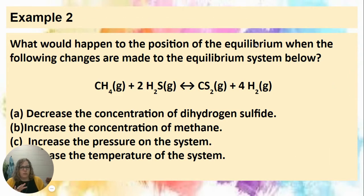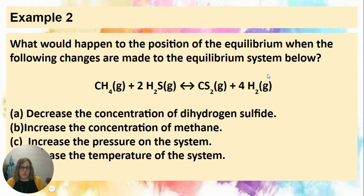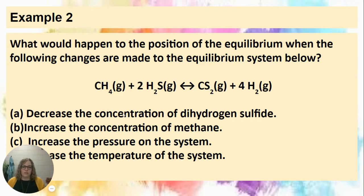The best way to understand this is through examples. We'll look at the reaction of methane (CH4) and hydrogen sulfide (H2S) making CS2 and 4 H2. We'll assume the reaction is at perfect balanced equilibrium, then go through four different changes: decrease the concentration of H2S, increase the concentration of CH4, increase the pressure, and increase the temperature. We'll look at how the reaction quotient ties into each change and what the graphs look like.